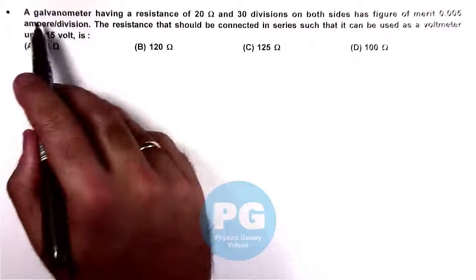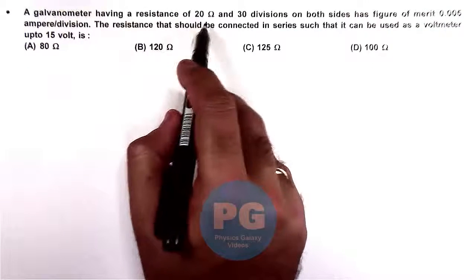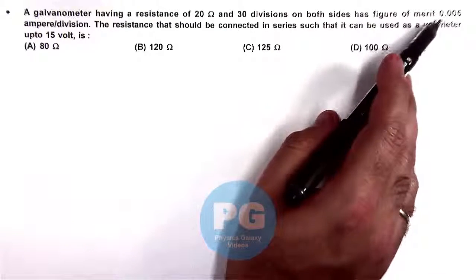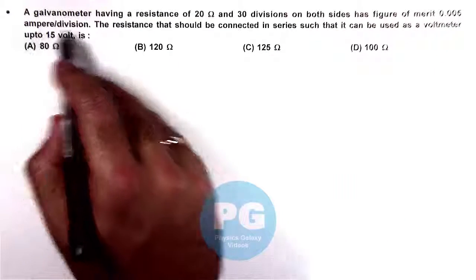In this question it says, a galvanometer having a resistance of 20 ohm and 30 divisions on both sides has figure of merit 0.005 ampere per division.